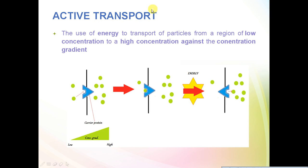Active transport is the use of energy to transport particles from a region of low concentration to high concentration, against the concentration gradient. Looking at this diagram, on the left-hand side you've got fewer molecules than the right-hand side, separated by a barrier with a carrier protein in the middle. The purpose of active transport is to go against diffusion and transport molecules from low concentration to high concentration — against the concentration gradient.